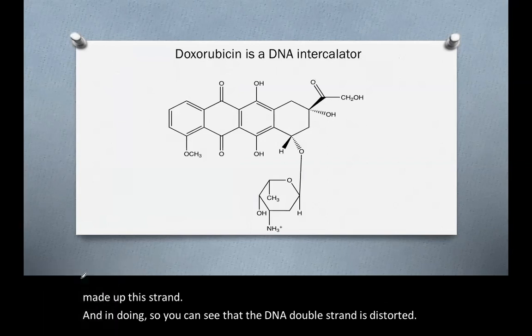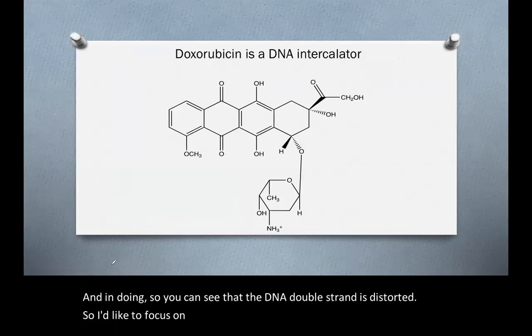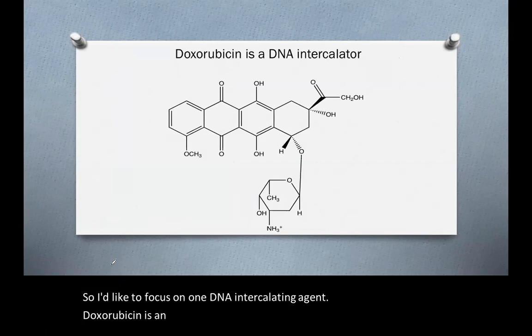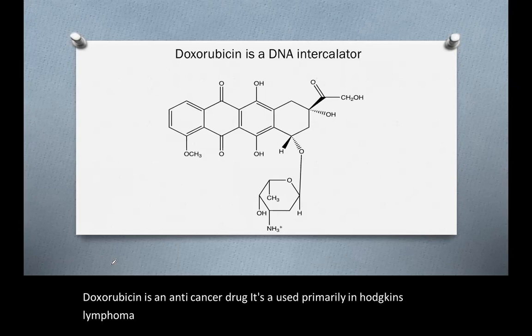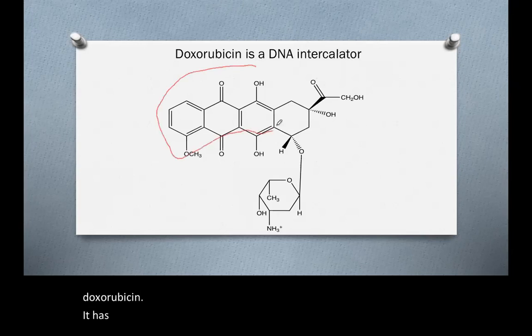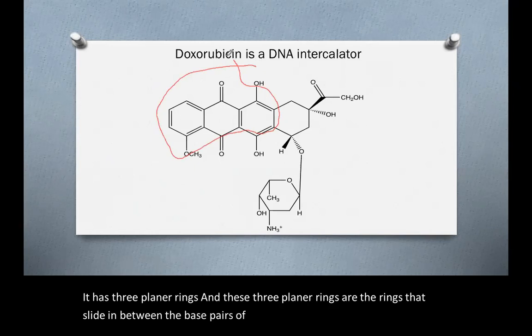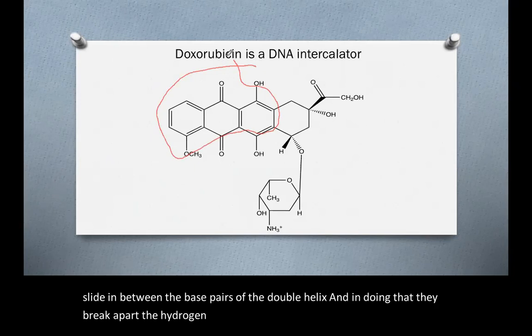So I'd like to focus on one DNA intercalating agent. Doxorubicin is an anti-cancer drug. It's used primarily in Hodgkin's lymphoma. It is an intercalator. And if you look at the structure of doxorubicin, it has three planar rings. And these three planar rings are the rings that slide in between the base pairs of the double helix. And in doing that, they break apart the hydrogen bonds that would normally be there and they distort the helix.